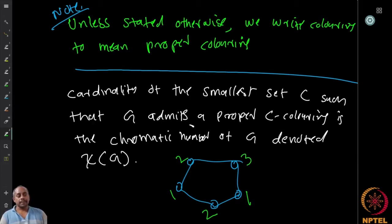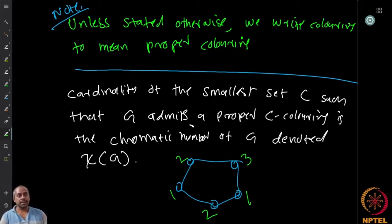We showed that fewer than three colors is not possible, and three is achievable, so χ(G) = 3. That is how we argue: show a lower bound (less than 3 doesn't work) and an upper bound (3 does work), so three is the chromatic number of this graph.